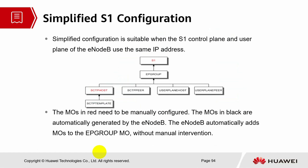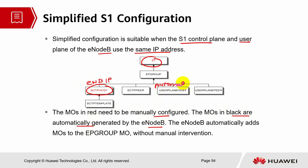Let's look into simplified S1 configuration. Simplified configuration is suitable when the S1 control plane and user plane of the eNodeB use the same IP address. The MOs in red need to be manually configured — these belong to your eNodeB IP. The MOs in black are automatically generated by the eNodeB. The eNodeB automatically adds MOs to the endpoint group without manual intervention. This only applies for endpoint mode, not link mode.